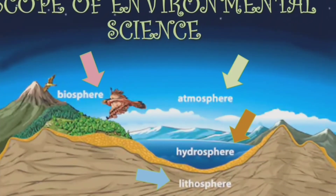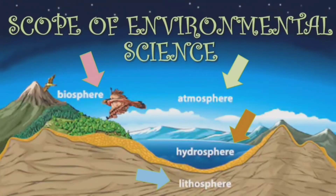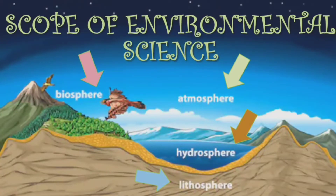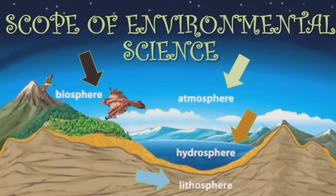Now let's talk about the scope of environmental science. It includes four major segments: the atmosphere, hydrosphere, lithosphere, and biosphere.